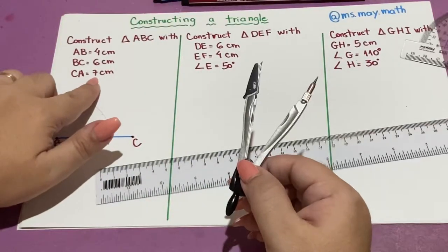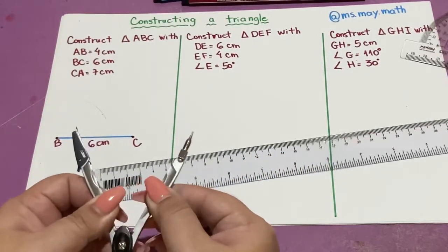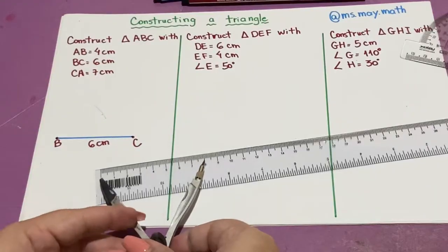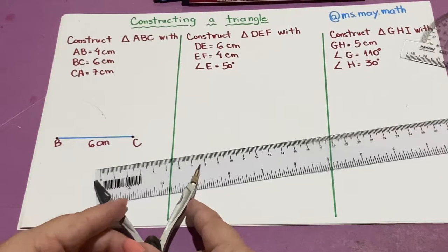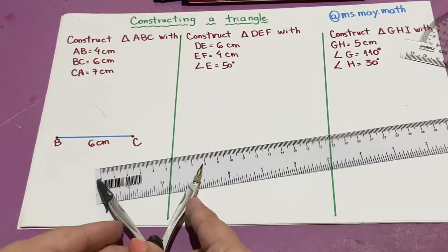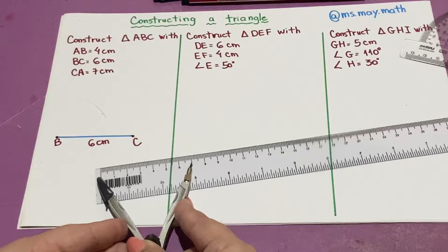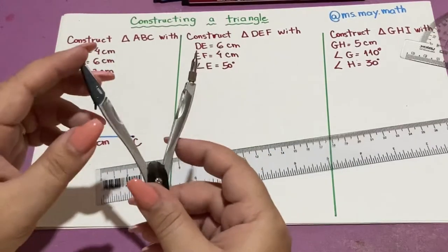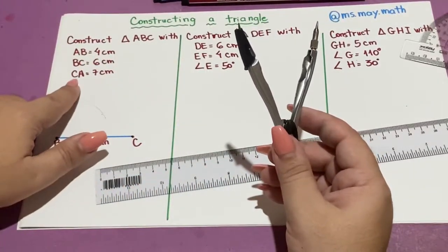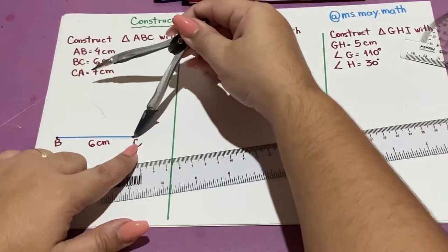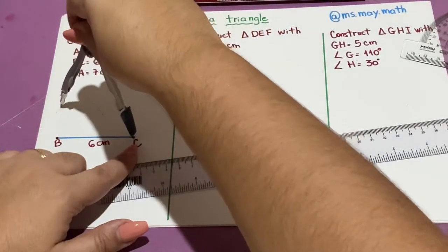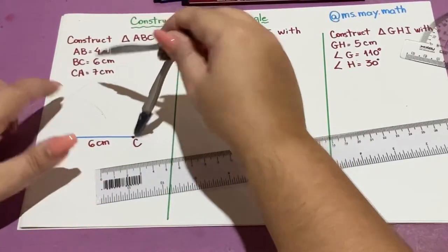Now I'm going to do the same for 7 centimeters. Opening, and measure 7 centimeters. Great. Now my fixed point will be on point C, and I'm going to do the arc again.